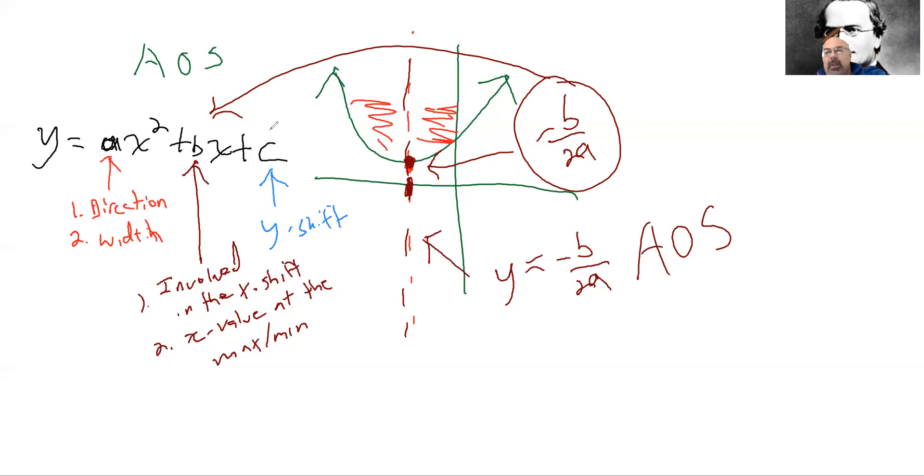So let's do an example here. Say I have the equation y equals x squared minus 6x plus 4, right? Now I'm going to ask you, I want two things. I want the axis of symmetry and I want the vertex, right? These are the two things I want on this parabola.